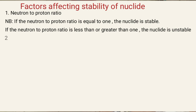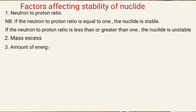Factor number two is mass excess. If the mass of the nuclide is excess, then the nuclide is unstable and is likely to undergo radioactive decay. Factor number three is the amount of energy released. If the amount of energy released is high, then that nuclide is going to undergo radioactive decay.